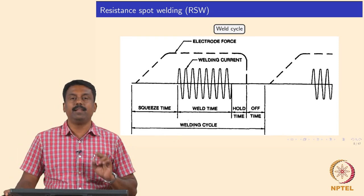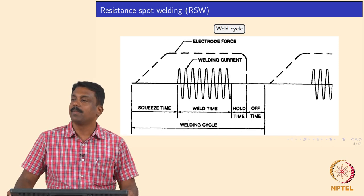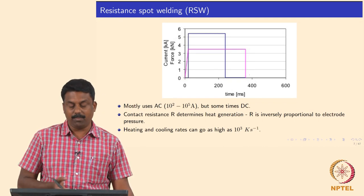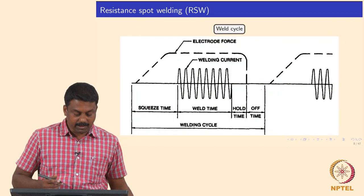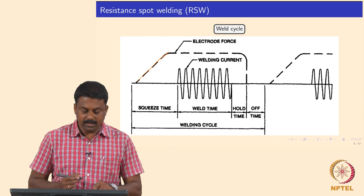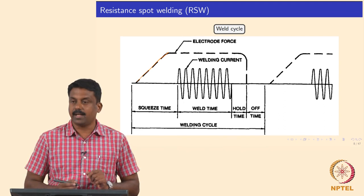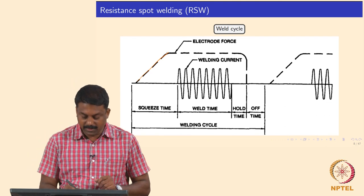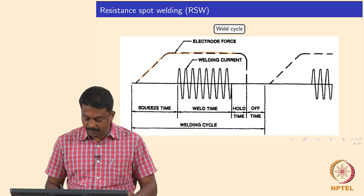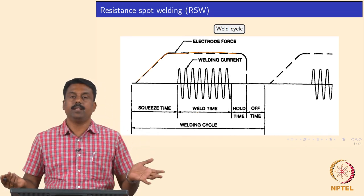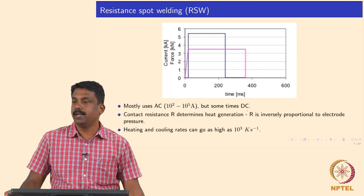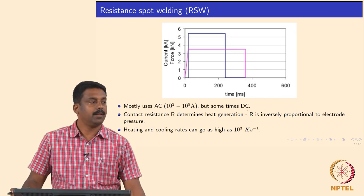For a simple weld thermal cycle, there is a squeeze time where the load is increased. The moment you achieve the required welding load, you start passing the current. You keep the load constant and apply the welding current over the welding time, then switch off the current and release the load. This simple weld thermal cycle gives us the required current needed for generating the required weld nugget diameter.